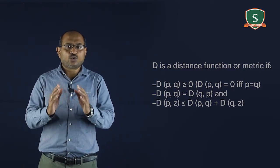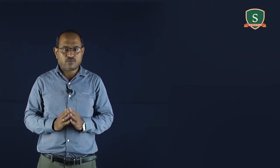The distance between two pixels p and q with coordinates x1, y1 and x2, y2 respectively can be formulated in several ways.